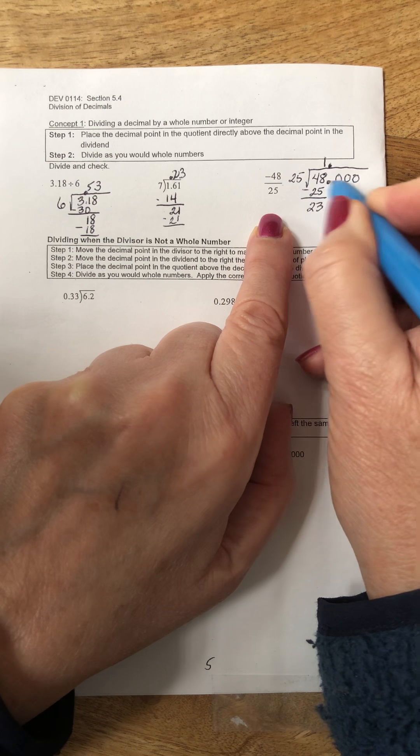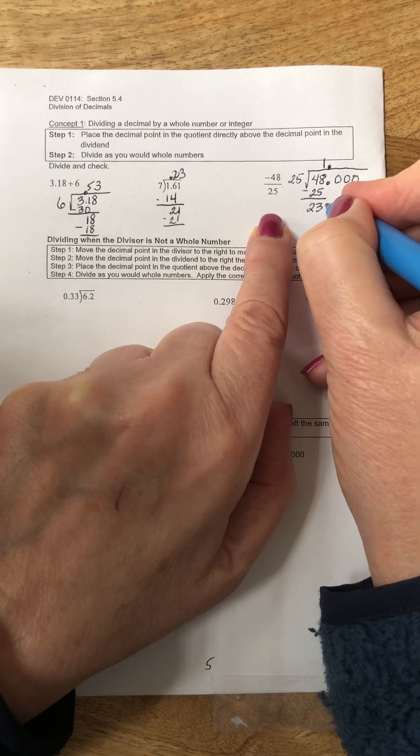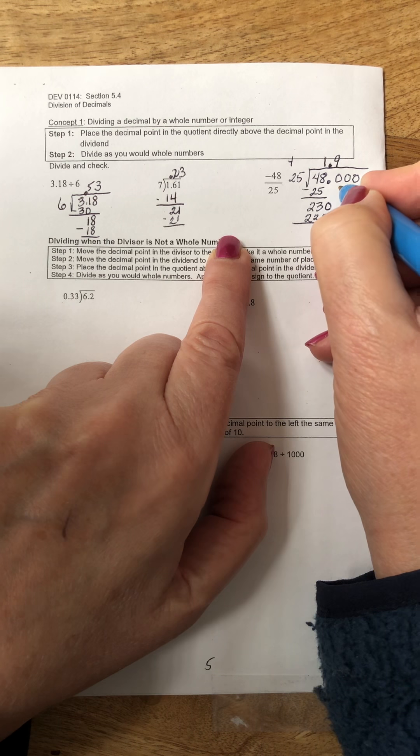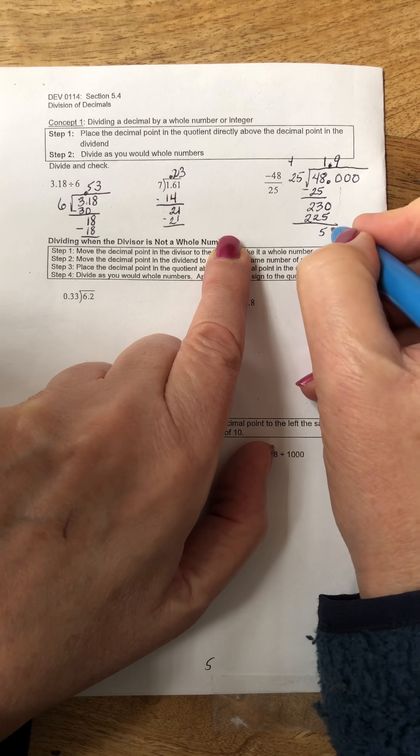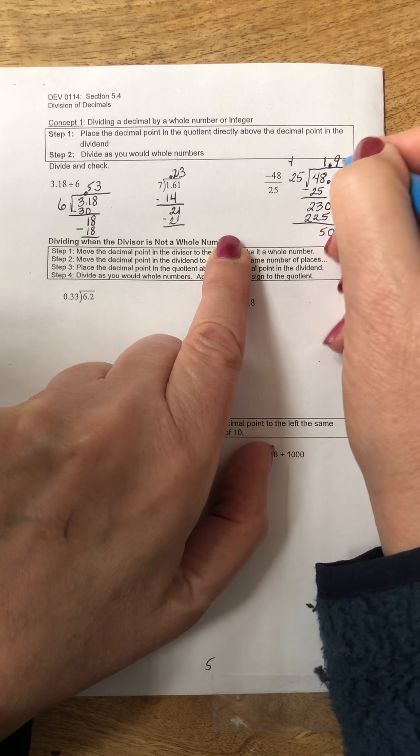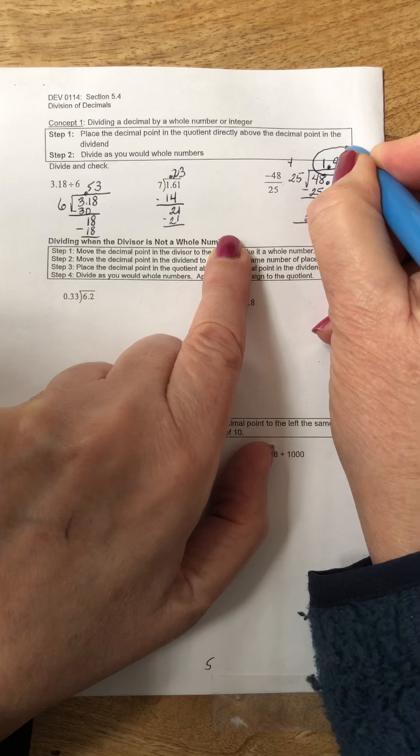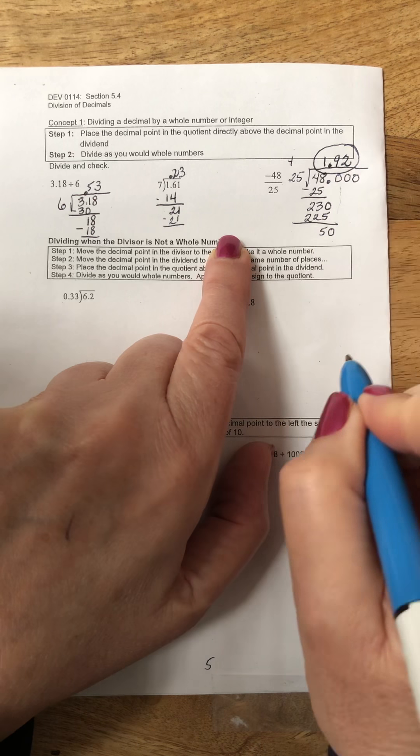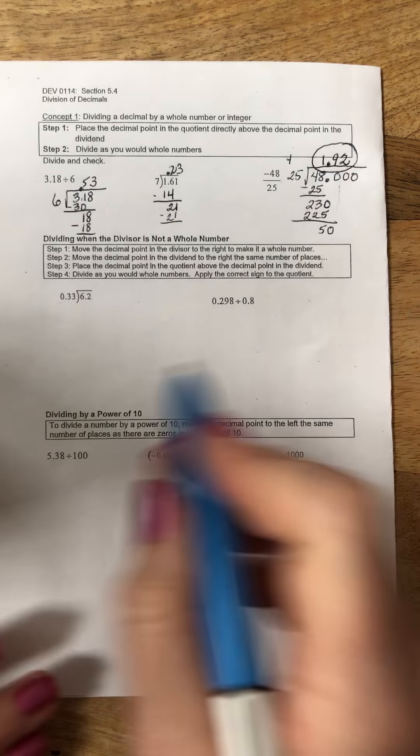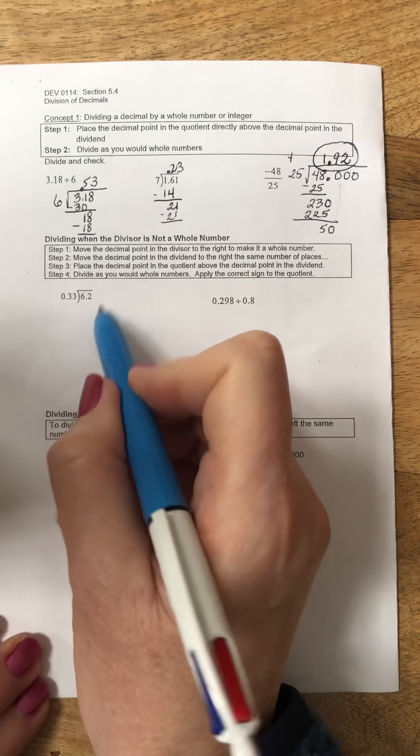I don't want to have a remainder with these, so I'm going to move this decimal point onto the quotient line and these zeros that I've tacked on I can bring down and continue dividing. 9 times 5 is 45, so when I subtract I have 5, bring down the 0, and 25 goes into 50 twice. This is what we call a terminating decimal - it terminates, it ends.